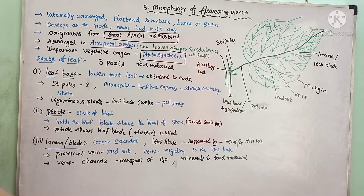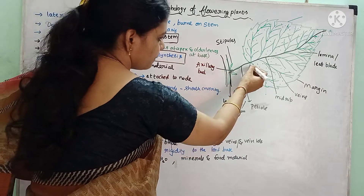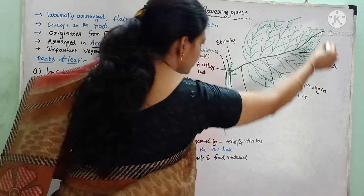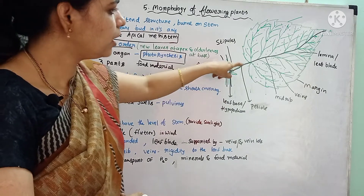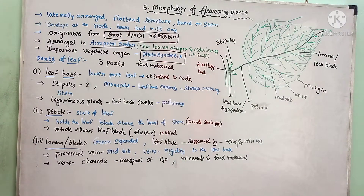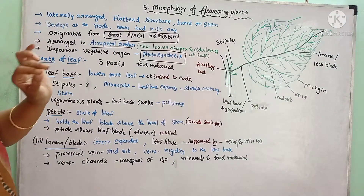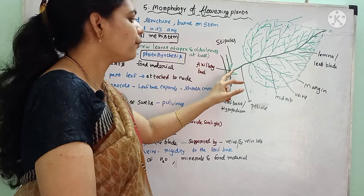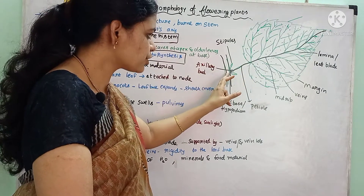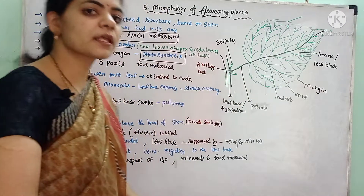If you see the structure of the leaf, the leaf consists of three parts: leaf base, petiole, and leaf lamina. The lowermost part of the leaf is called the leaf base, by means of which it is attached to the stem at the node region.